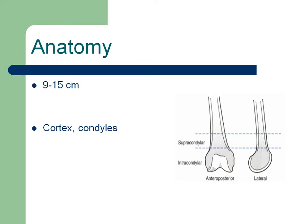In definition, what is the meaning of the distal femoral fracture? When we refer back to the textbook, it states that between 9 to 15 centimeters in the distal part of the femur can be defined as a distal femoral fracture. This also involves the condyles and the cortex of that region.